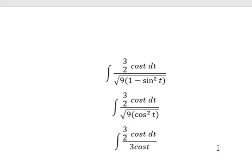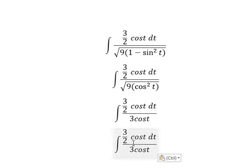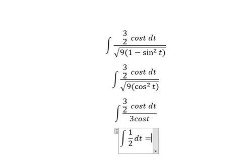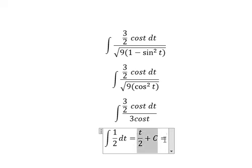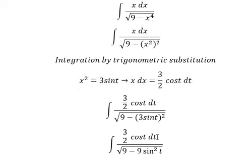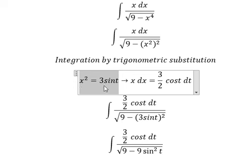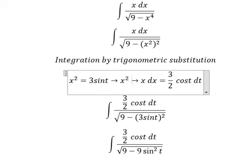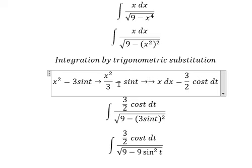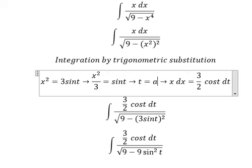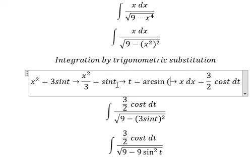Now we simplify 3·cos(t), which gives us (1/2)dt. The integration of this is about t. We need to divide both sides by number 3. And we can find the value of t, which is arcsin of this expression.